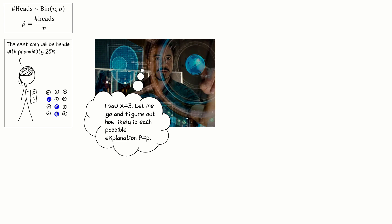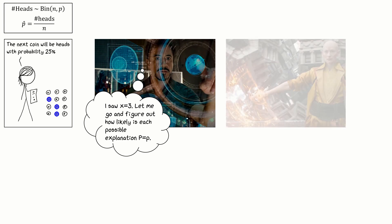But there's another approach, a mystical transcendental way to see the world. The mystic says to themselves, I saw three heads and concluded p hat equals 25% in this reality. But what happened in all the other dimensions of the multiverse? What p hat did they see?